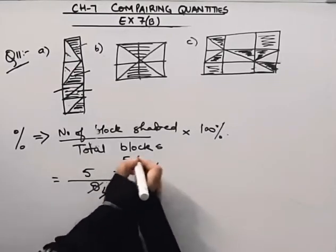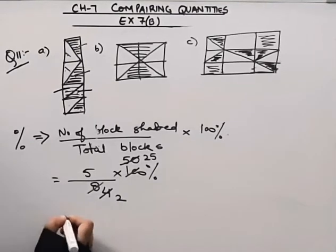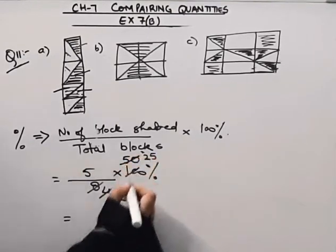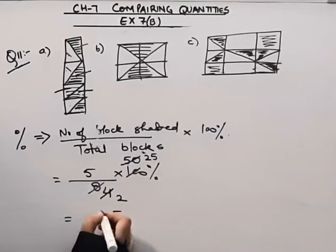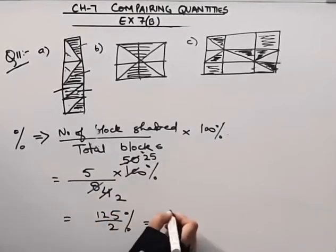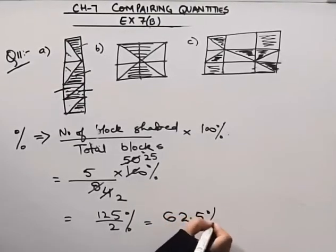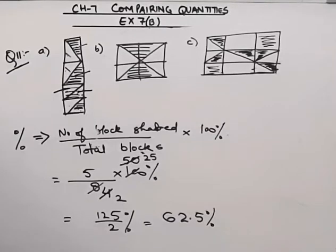5 divided by 8 multiplied by 100. Working through the division: 2, 5, 10. 5, 5, 25. This will be 2, 6, 12. 0.5 percent. So the answer is 62.5 percent. I hope this is clear.